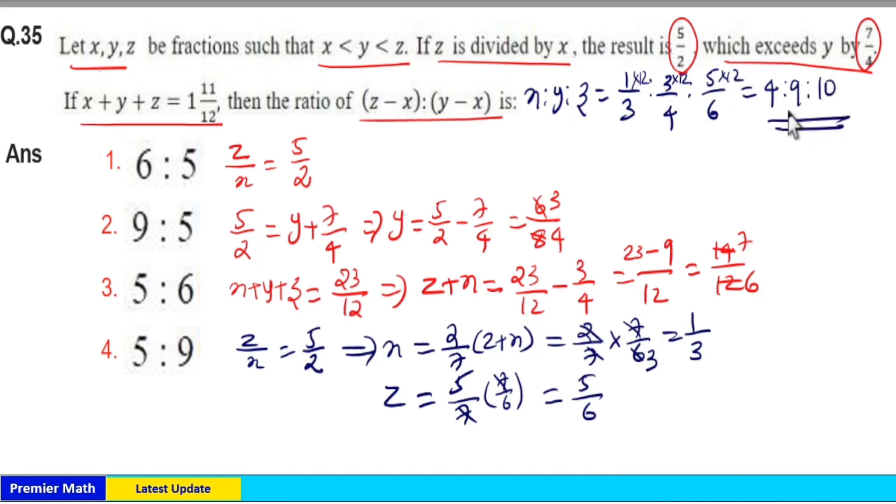So 4 : 9 : 10 is x : y : z. Therefore z - x = 10 - 4 = 6, and y - x = 9 - 4 = 5. The ratio is 6 : 5, so option 1 is your answer.